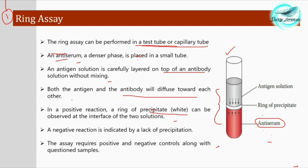A ring of precipitate, which is usually white in color, can be observed at the interface of the two solutions. This shows that the antigen is reacting with the antibody — double immunodiffusion is occurring. A negative reaction is indicated by a lack of precipitation.